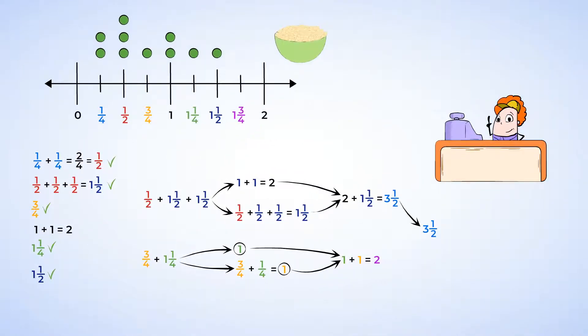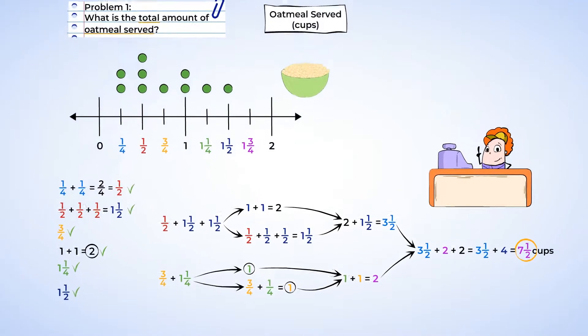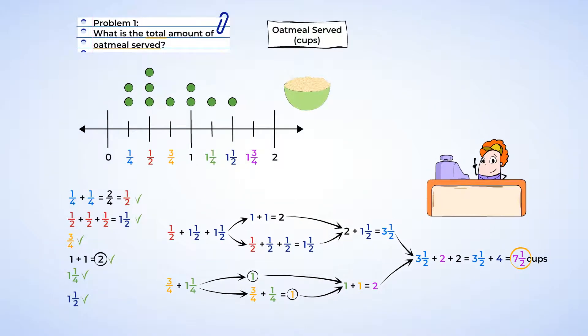All right, so now three and one-half, two and another two. Two plus two is four, and three and one-half plus four is seven and a half. A total of seven and one-half cups of oatmeal was served. And I have my bowl of oatmeal ready for the next problem.